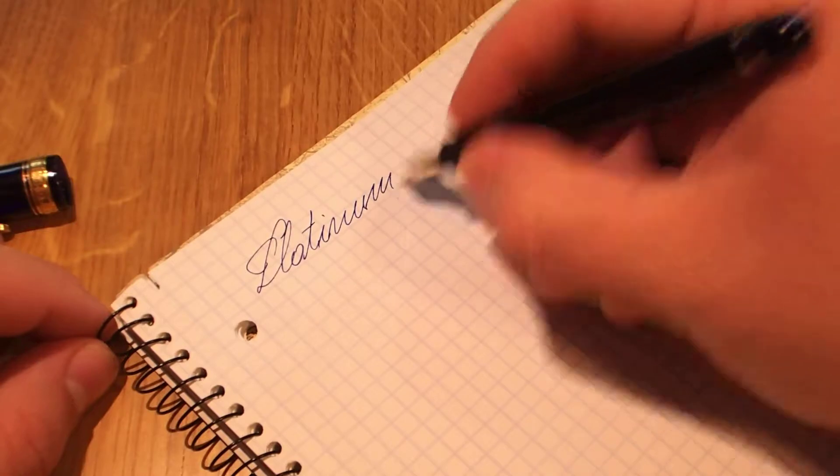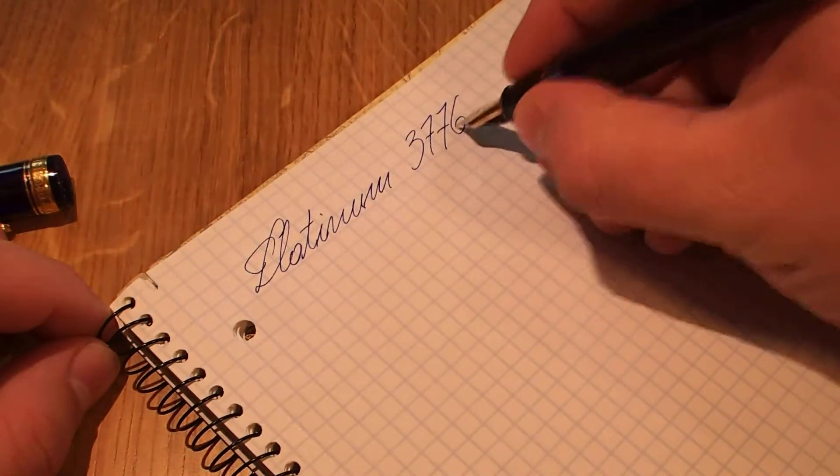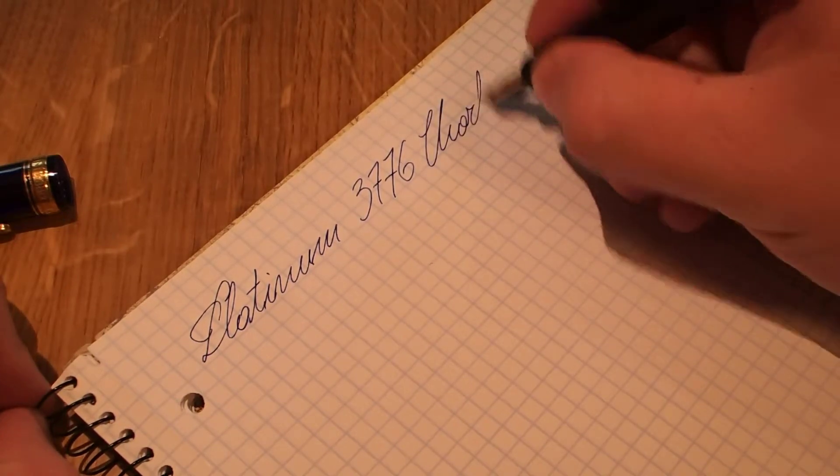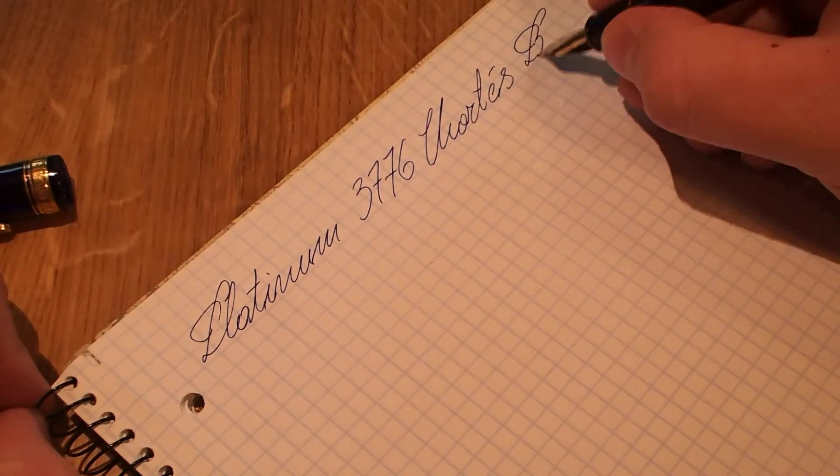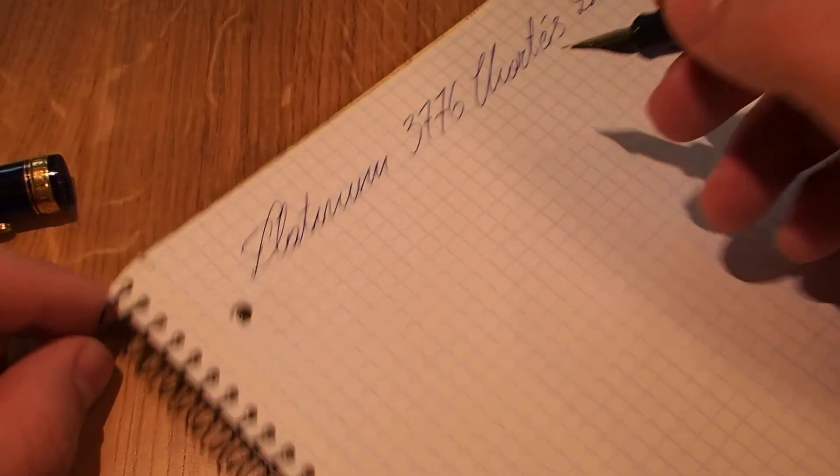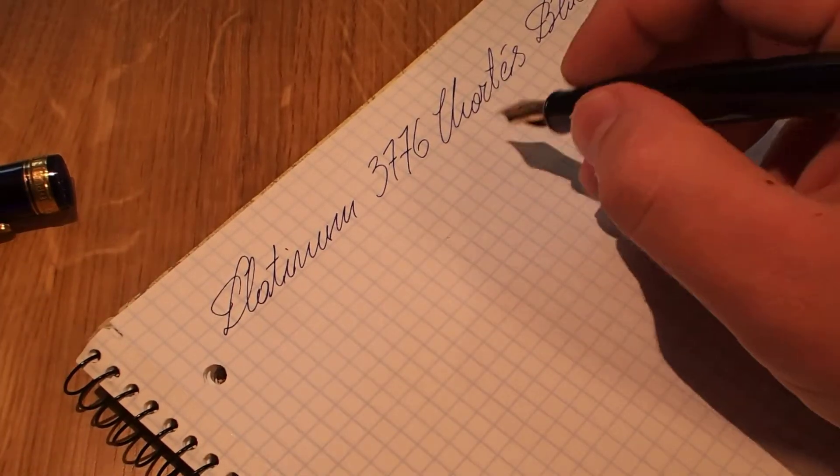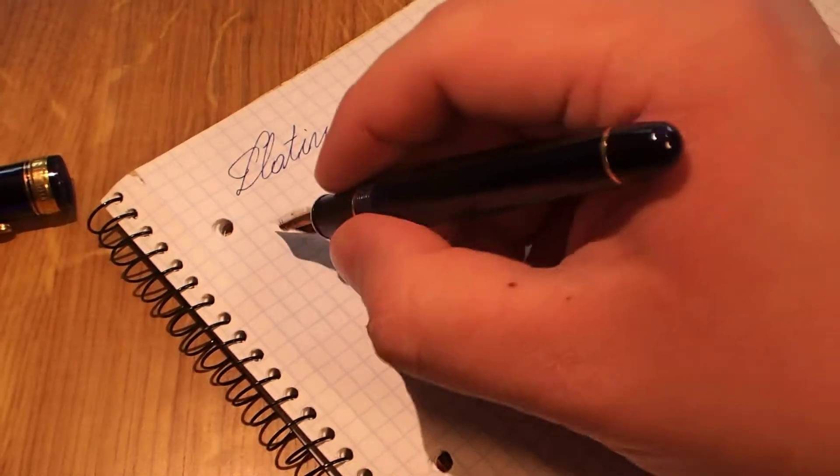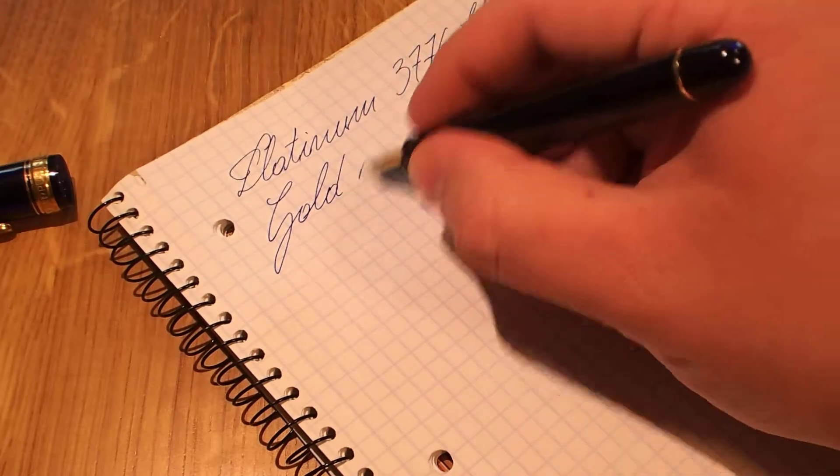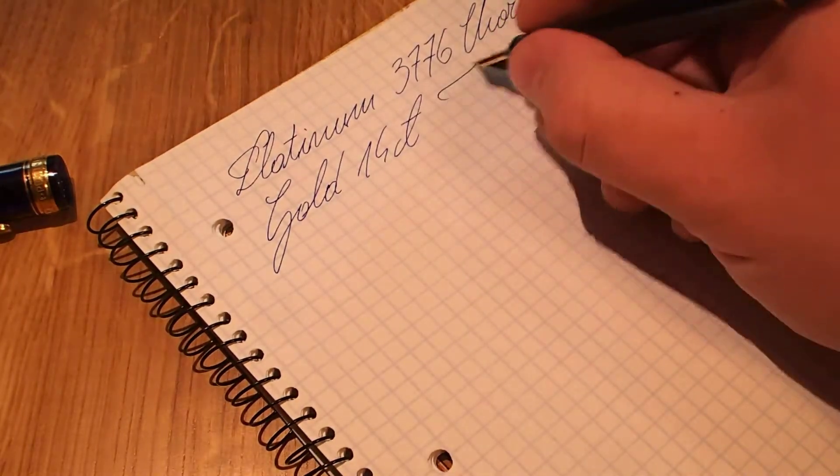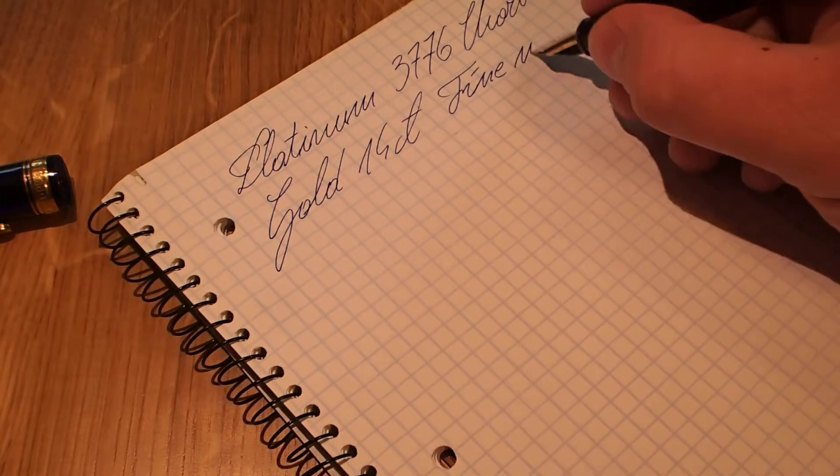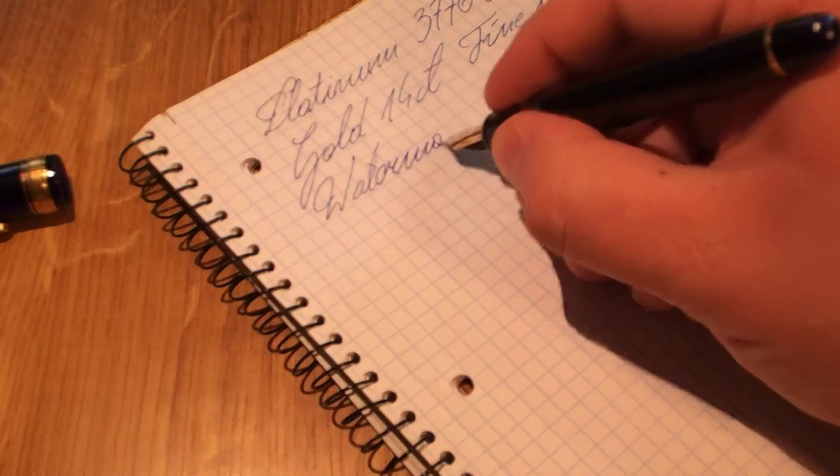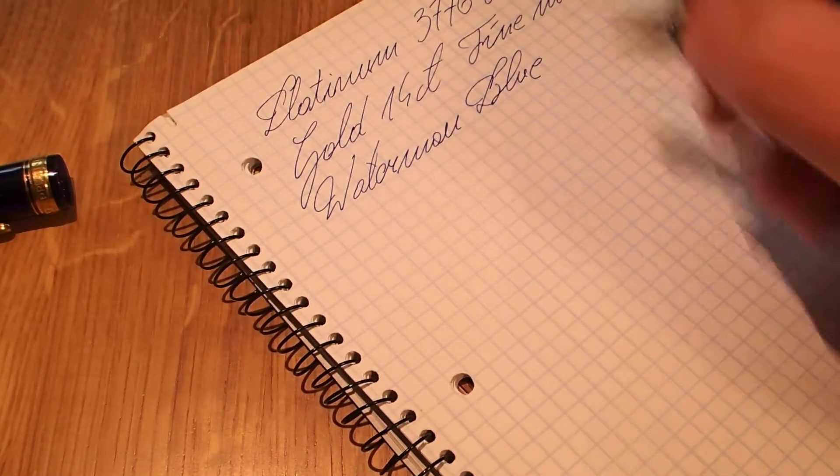So the pen is Platinum 3776, I don't know if I spell it correctly but it's a French word. So it is a gold 14 carat fine nib. The ink that I'm using is Waterman Blue.